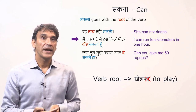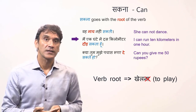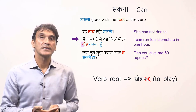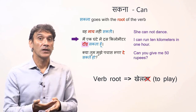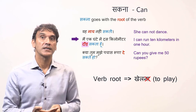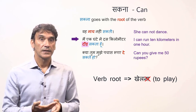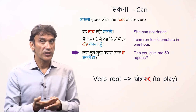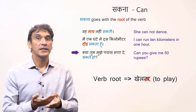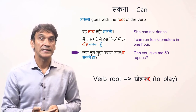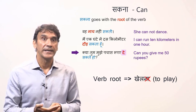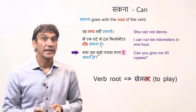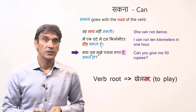Another example: 'main ek ghante mein das kilometer daur sakta hoon' — I can run 10 kilometers in one hour. Again, the verb daurna is only in its root form — daur. Final example: 'kia tum mujhe pachas rupee de sakte ho?' — can you give me 50 rupees? Again, the verb is deyna, to give, and it only takes the root form — de. De sakte ho — can you give?